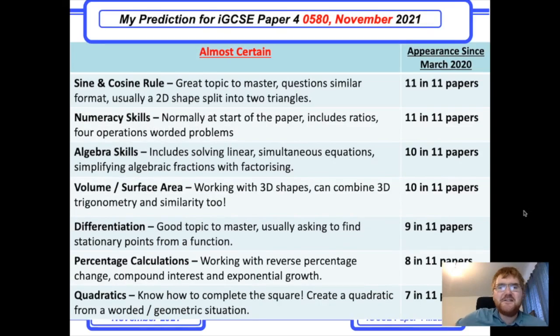My almost certain category, which I'm sure is what you're going to be looking at. Sine and cosine rule comes in at my number one. The great thing about this topic is the questions are usually pretty similar. They give you some kind of big shape split into two triangles, and then you need to use the sine rule or cosine rule to work out various angles and various sides. Sometimes they wrap this up in a bearings question as well.